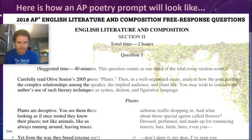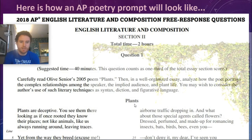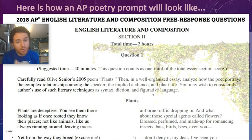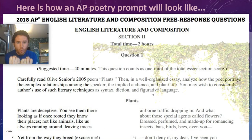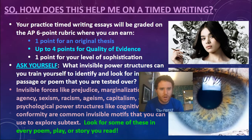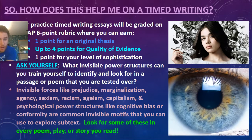Here's an example: a 2018 AP poetry prompt for the poem Plants by Olive Senior — exploring the complex relationship between the speaker, the implied audience, and plant life. They suggest literary techniques like syntax, diction, and figurative language. What else can you look for? Certainly tone. How does an author convey meaning through tone? Irony. And what are we talking about now? Power. Agency. Political subtext. Your practice timed writing essays will be graded on the AP six-point rubric: one point for your original thesis, up to four points for quality of evidence, and one point for your level of sophistication.